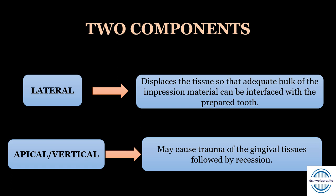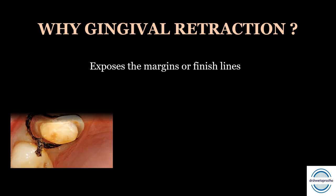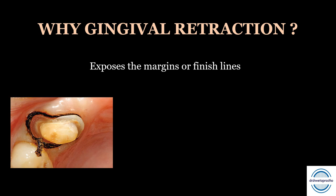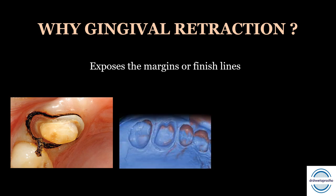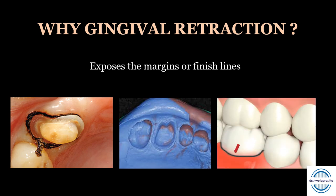We conclude that lateral displacement should be preferred and apical or vertical displacement should be avoided. Why do we want gingival displacement? It will expose the margins or finish lines of the prepared tooth — especially subgingival margins — and the bulk of impression material will go around the margin. This adds to the precision and marginal fit of the restoration and prevents periodontal disease around the area.